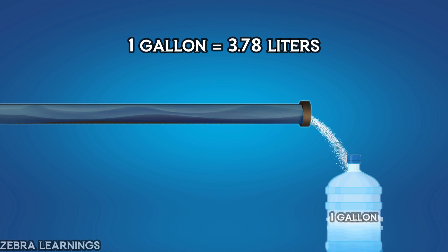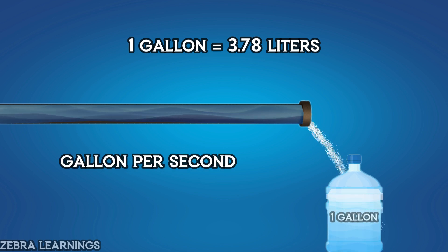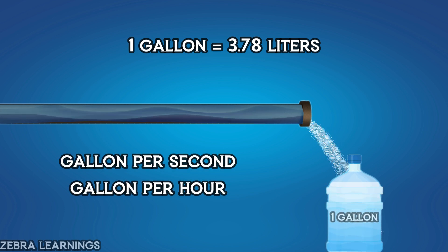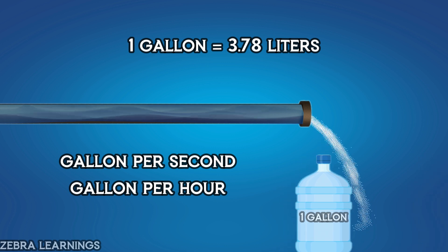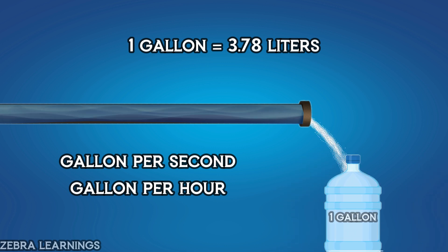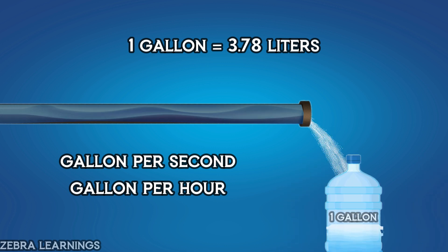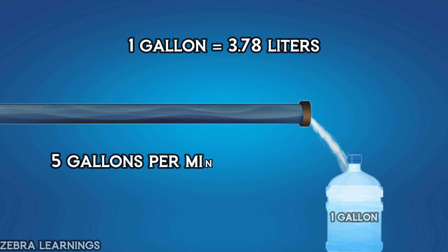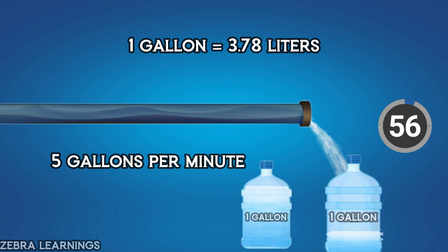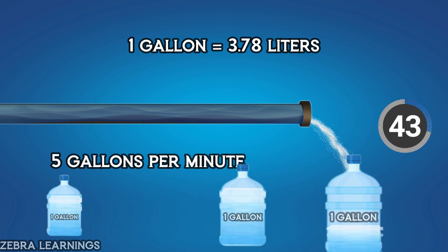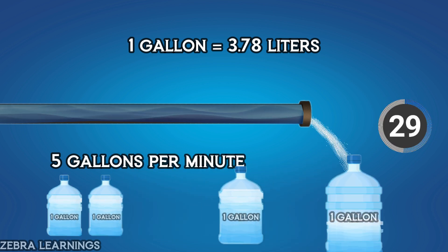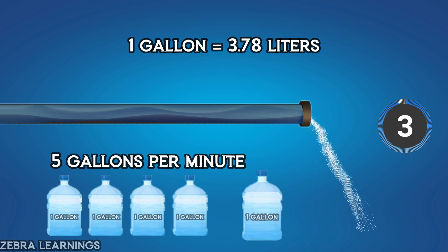Like gallons per minute, we also have gallons per second and gallons per hour. These units tell you how much water flows in 1 second or 1 hour respectively. For example, a water flow rate of 5 gallons per minute means that 5 gallons of water flow through the pipeline in 1 minute.